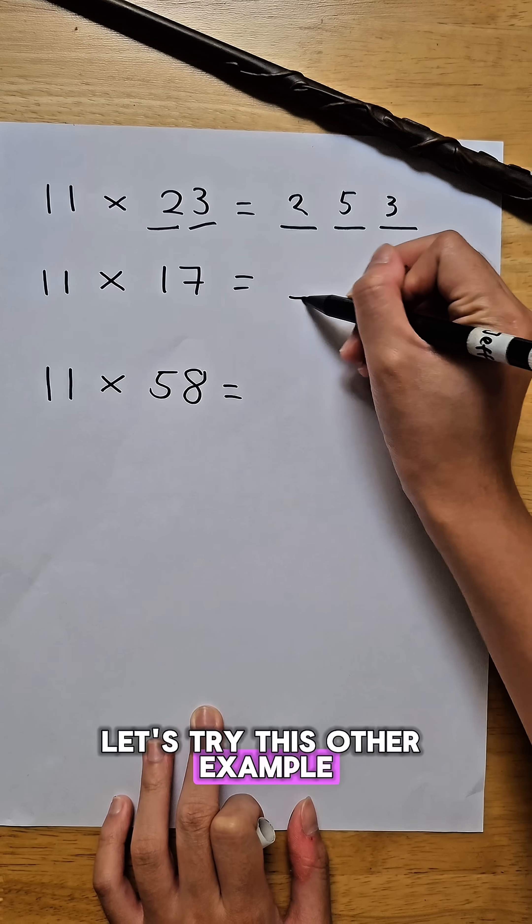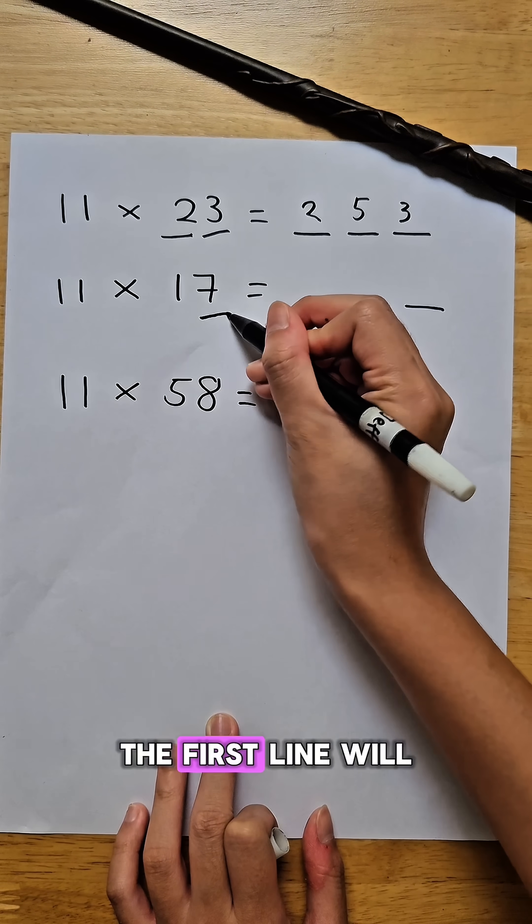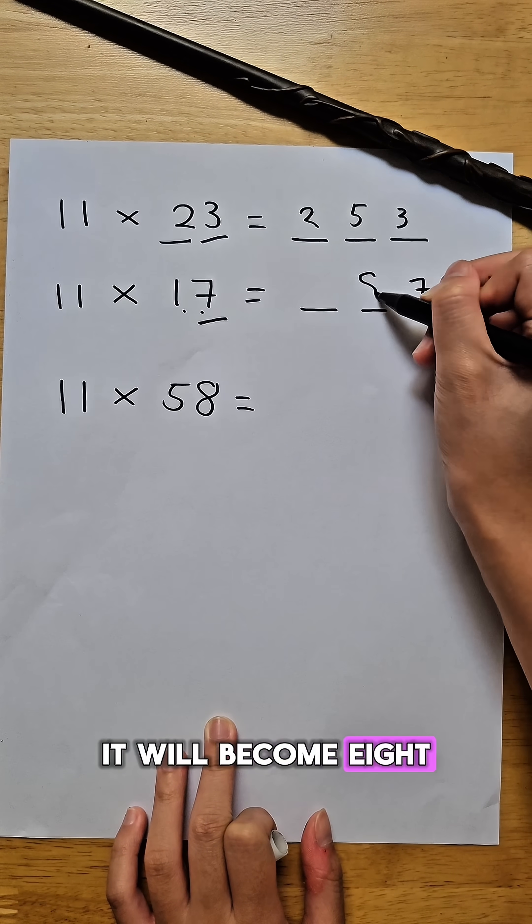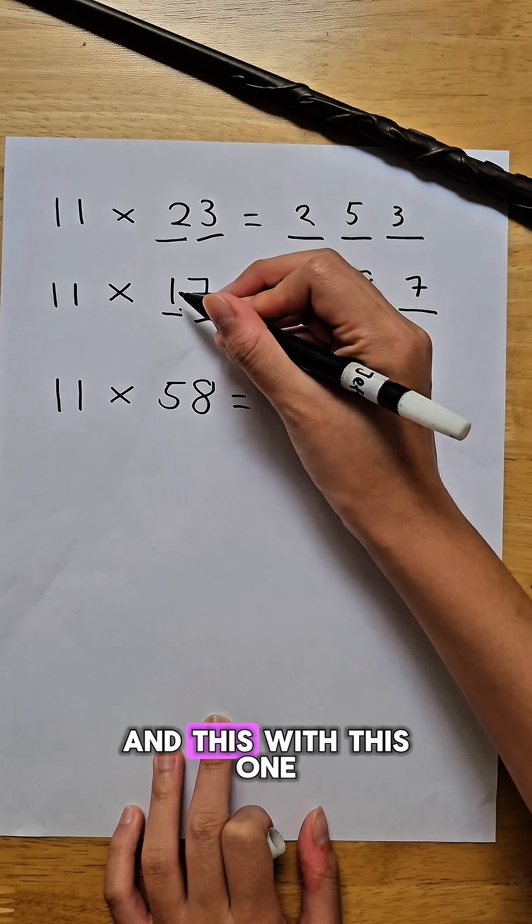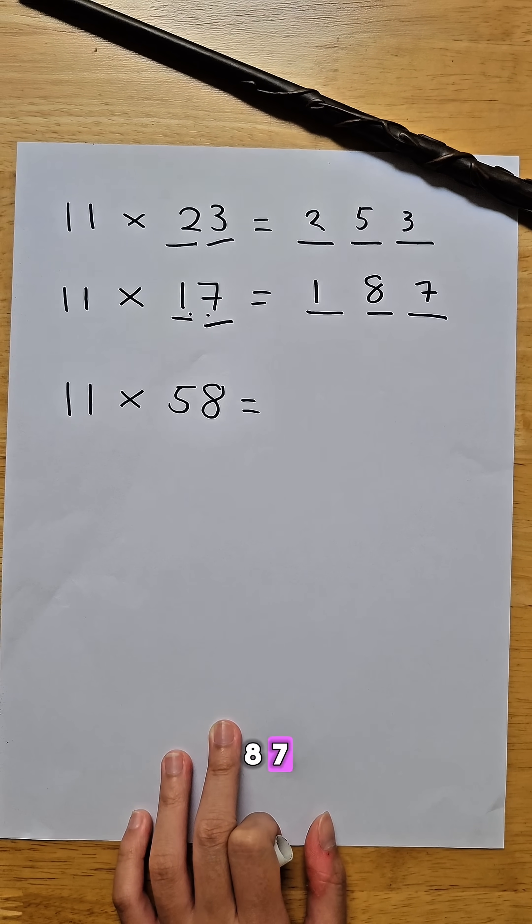Let's try this other example. 11 times 17. Draw three lines. The first line will be 7. Add these two numbers. It will become 8. And with this one, put it in the front line, which will be 1, 8, 7.